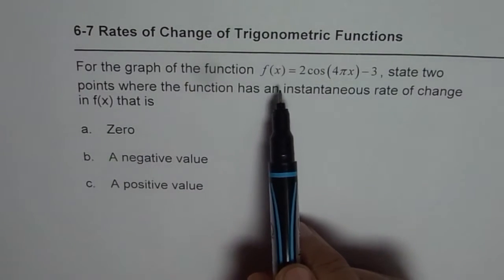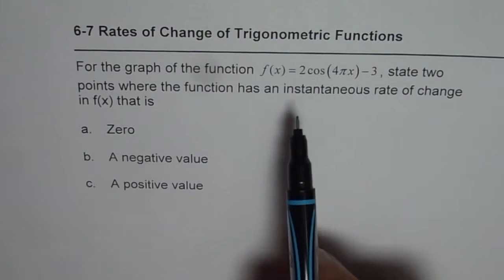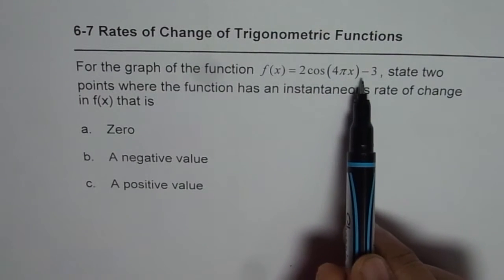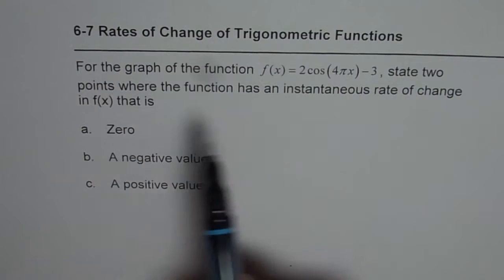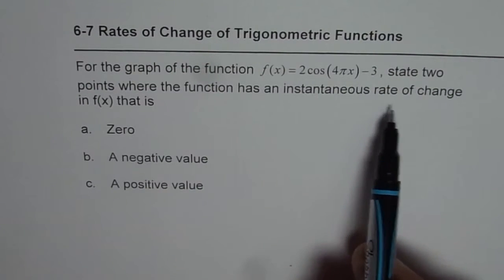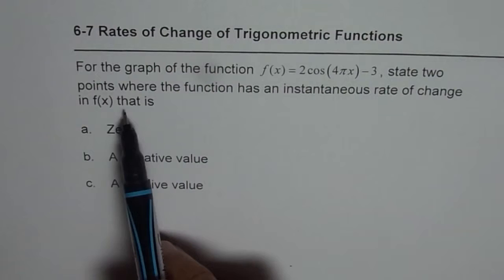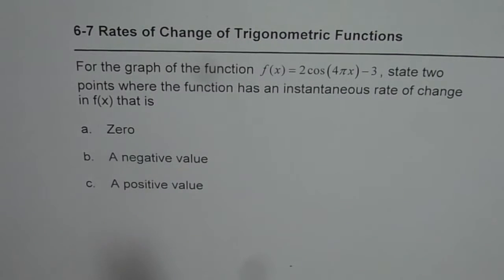for the graph of the function f(x) equals 2 times cosine 4πx minus 3, state two points where the function has an instantaneous rate of change in f(x) that is zero, negative or positive.